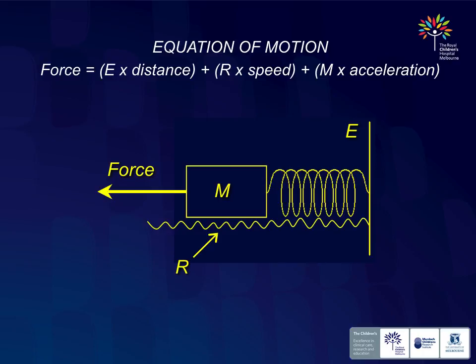The right pressure settings to put on a ventilator are equal to elastance times distance plus resistance times speed plus mass times acceleration — this is Newton's law of motion applied to the lung. What we're trying to do is provide enough force to the lung to allow it to move: gas goes in and then gas comes out. We need to understand what things are stopping the lung moving when we apply pressure. First we have to overcome the resistance of the circuit — everything stopping gas getting from the ventilator to the alveolus through the ET tube and airways. Resistance is related to time; a high resistance means it takes longer for gas to get through.